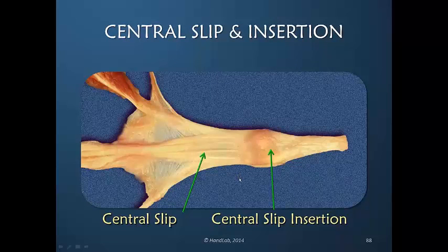We talked about variable anatomy. Here, instead of seeing one central slip and very clearly defined conjoined lateral bands, what we see instead in this specimen is multiple tendons fanning out and going in multiple directions. But there still is a central slip that carries tension down to the PIP joint, and there would be an insertion distal to the PIP joint.